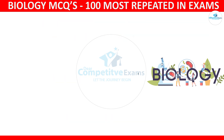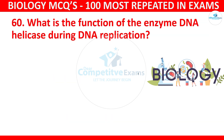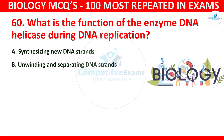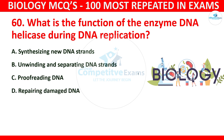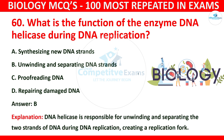Question number 60: What is the function of the enzyme DNA helicase during DNA replication? The options are synthesizing new DNA strands, unwinding and separating DNA strands, proofreading DNA, or repairing damaged DNA. The correct answer is B: unwinding and separating DNA strands. DNA helicase is responsible for unwinding and separating the two strands of DNA during replication, creating a replication fork.